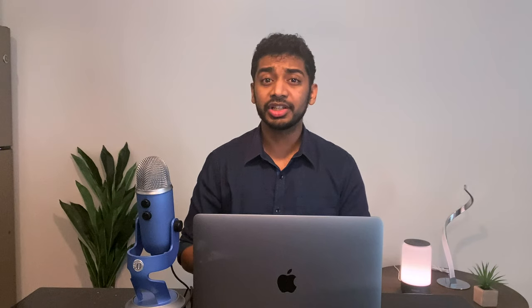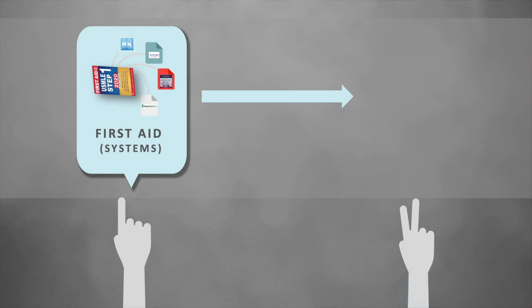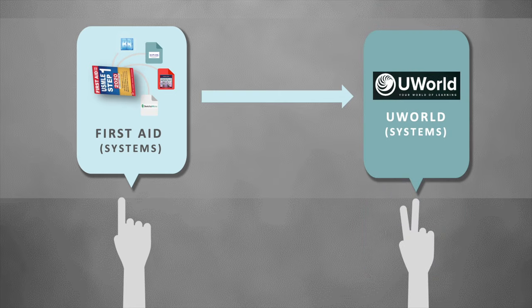The second round is where you use it as an assessment tool to gauge your knowledge and work on your question strategy. To do this, you should do your UWorld in tutor mode and system-wise in the first round. This is important because you want to annotate into First Aid easily. The most efficient way is to go through systems — so if you do cardiology in First Aid, then do cardiology in UWorld to assess your knowledge, apply the theory, and write all the information from UWorld that's not in First Aid.